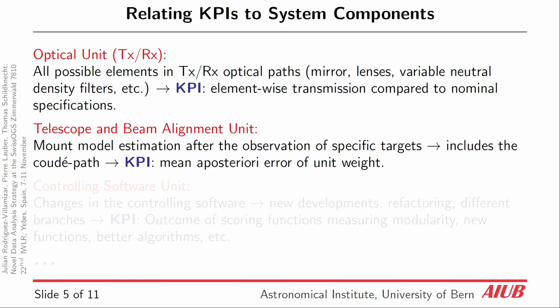For the telescope and beam alignment, we can compute the mount model which includes the CUDE path for our station — this is very specific for Simmerwald. We assess the mean and posteriori error of unit weight to see how good the pointing is and if it is behaving as expected. This is highly correlated with the return rate that we receive for specific satellites, as we will see later on.